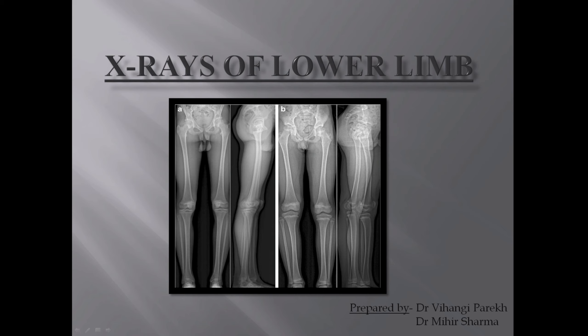Hello everyone. Today we will be discussing the radiology of the lower limb. We will be seeing the X-rays of the hip joint, the knee joint, the ankle joint and the foot. Before we start, let's get a brief idea of how we go about it. First of all, we need to know a couple more names by which X-rays are known — it is also called a radiograph or a skiagram. While explaining a skiagram, we need to mention the view in which it is taken. It could be an AP view, a PA view, a lateral view, or a dorsoplantar view. These are some of the views we use in the lower limb, and we will discuss them individually along with their X-rays.